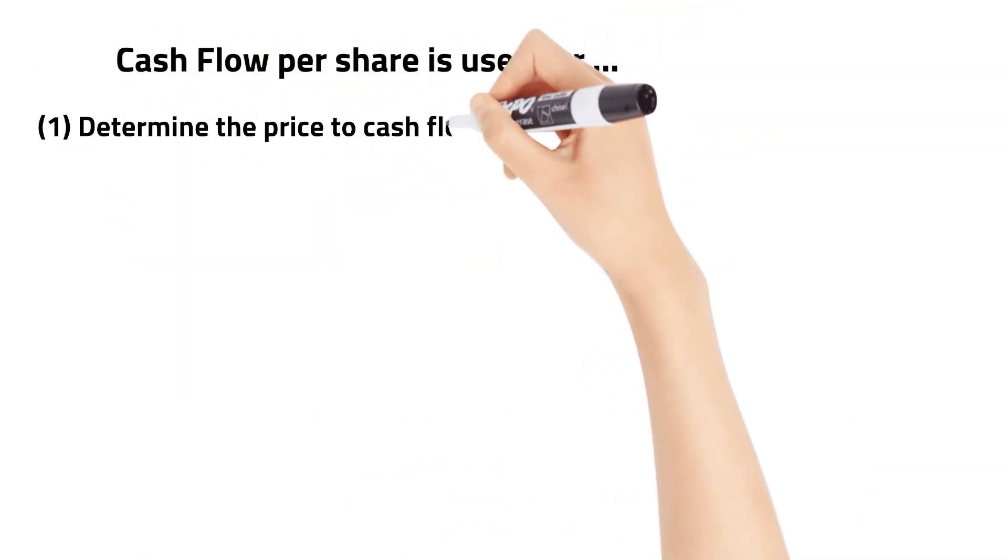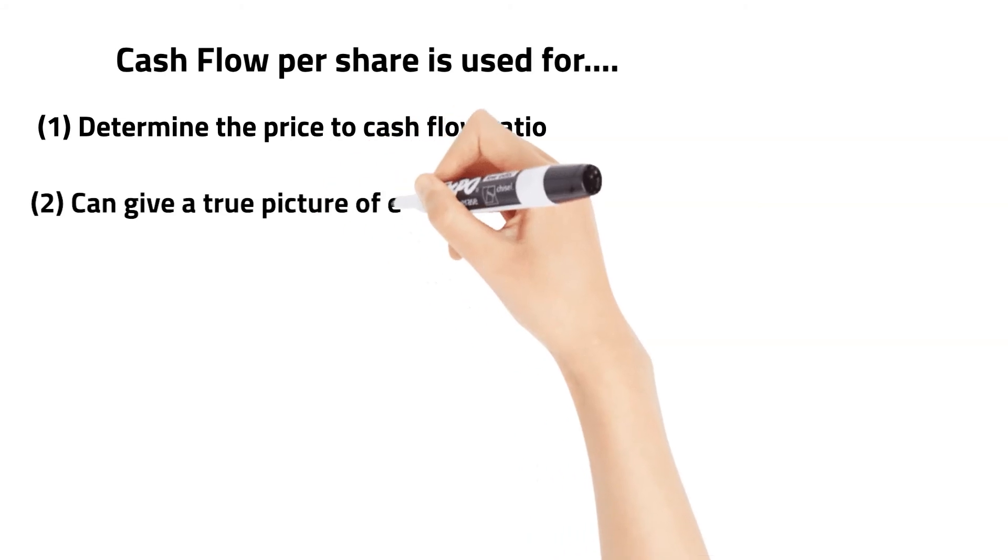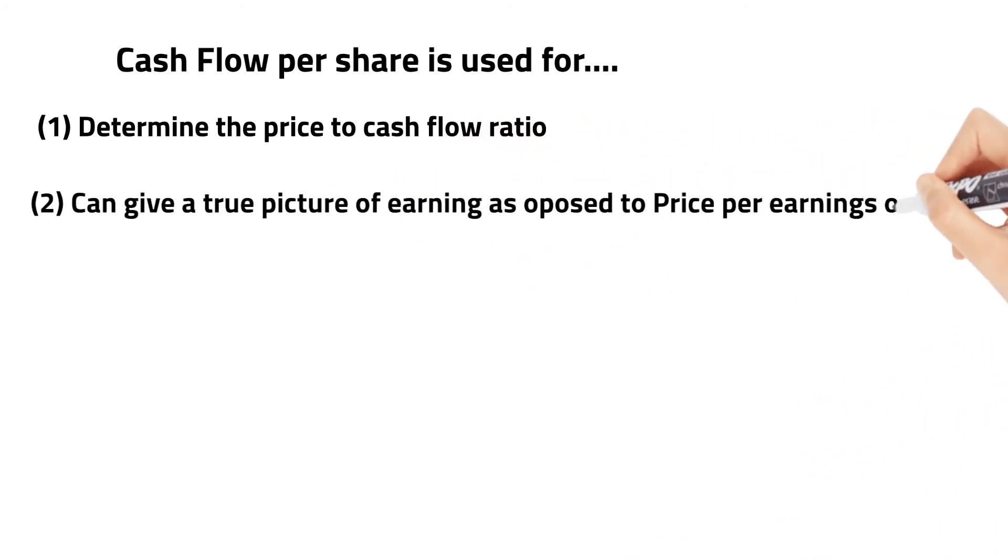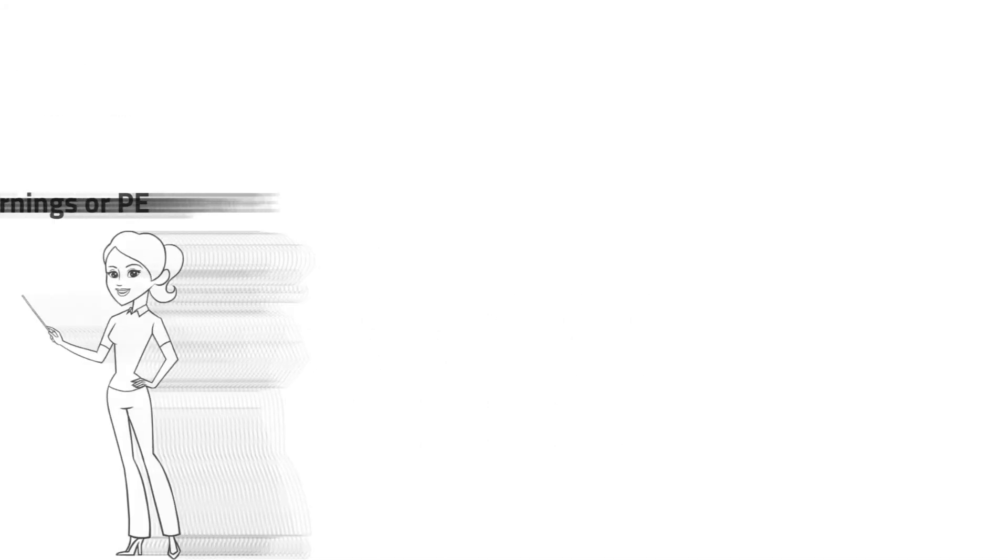The cash flow per share of stock is used to determine the price to cash flow ratio. Additionally, cash flow per share can be said to give a truer picture of a company than earnings per share, as earnings per share may be manipulated.